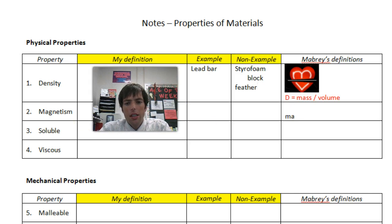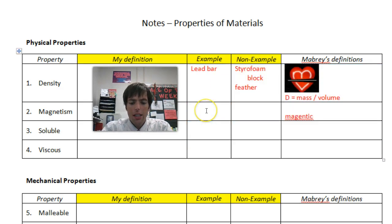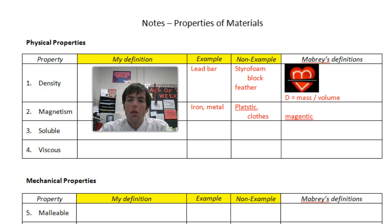Magnetism means magnetic. And if we need to say anything else, we are in trouble, so let's not. Magnetic stuff is like iron and different types of metal. Non-magnetic stuff is stuff made of plastic, clothes — there's a whole host of stuff.